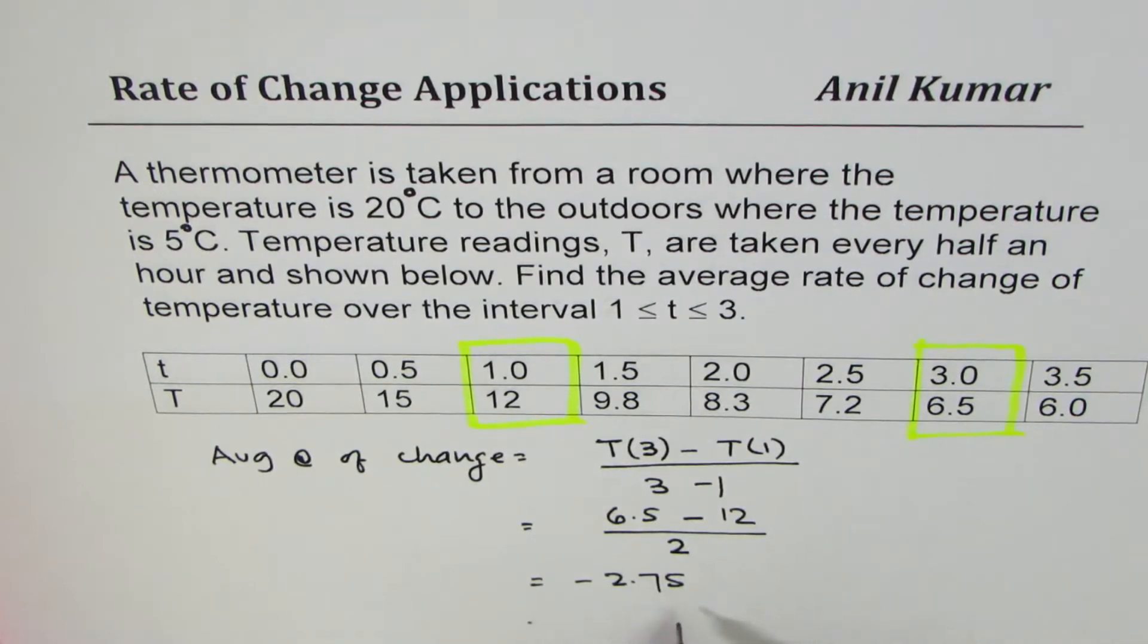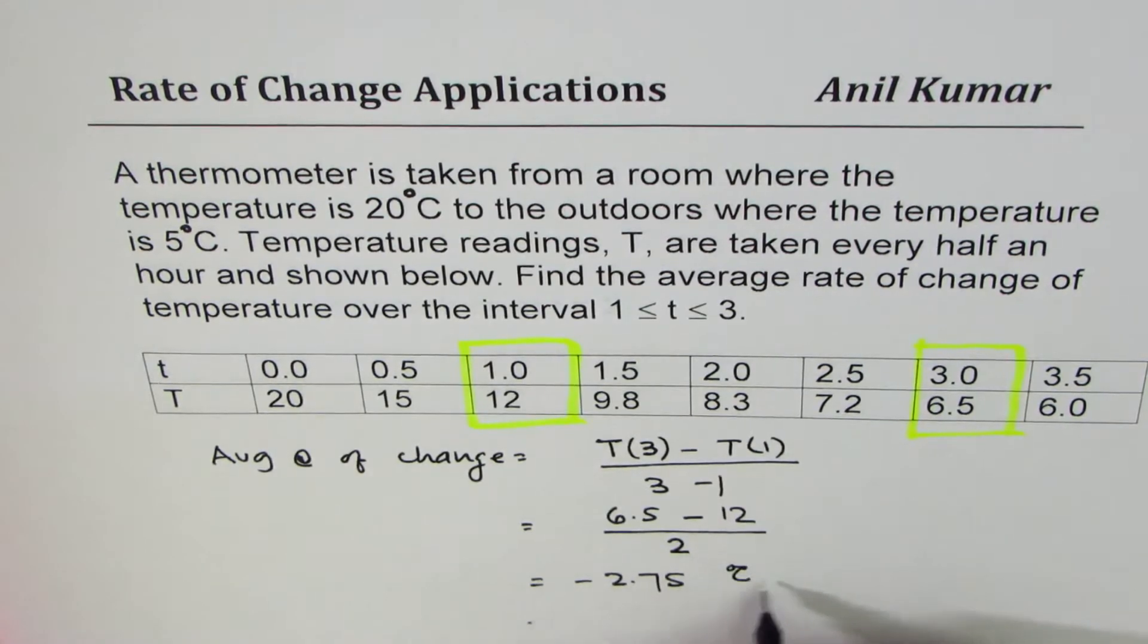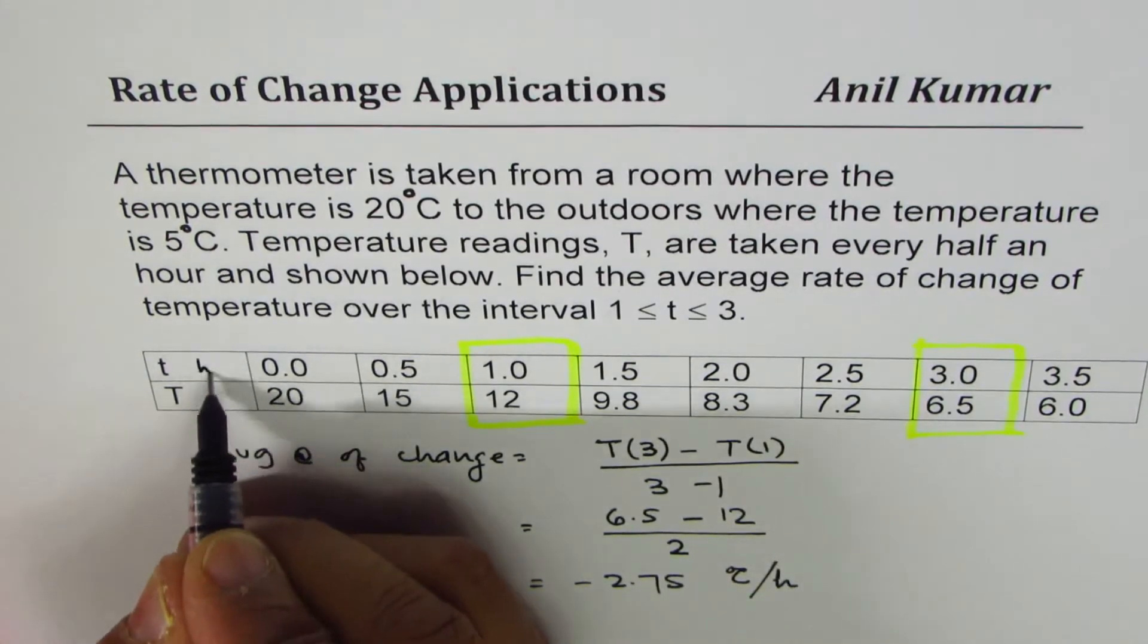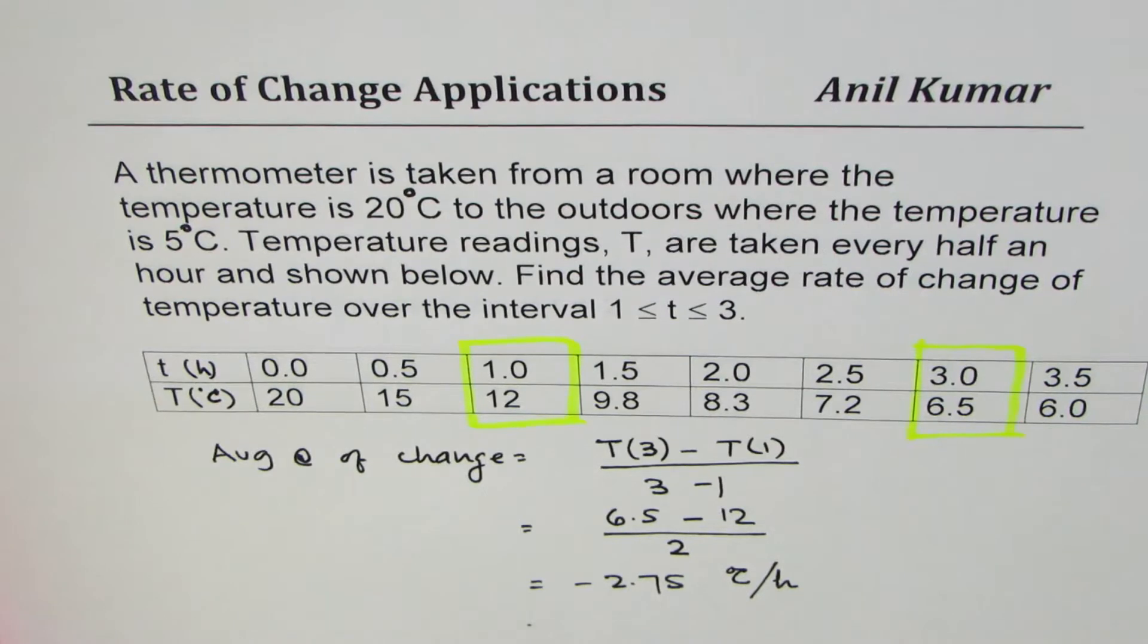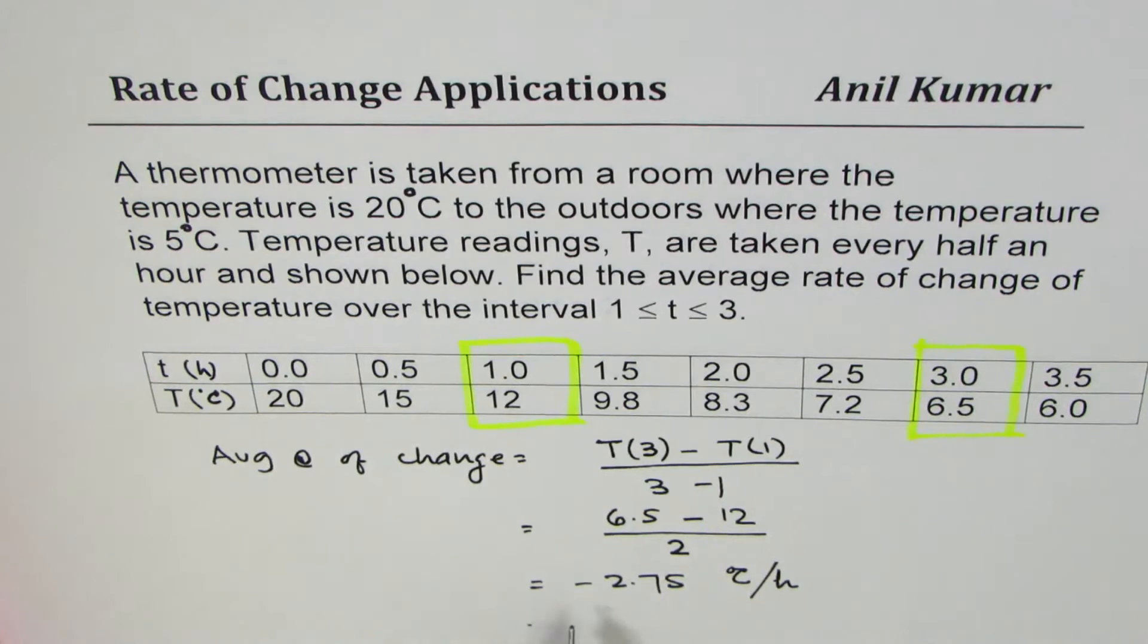Now all the time when you have this, you should always write units. Temperature is in degree centigrade, so degree centigrade per time is in hours - per hour. You should include units; that's very important. Purposely the units were missed here to draw your attention later. Negative means that the temperature is falling.